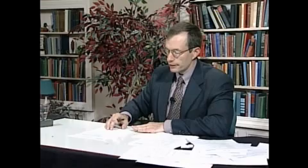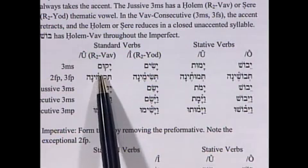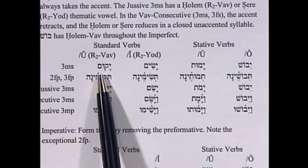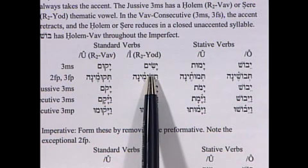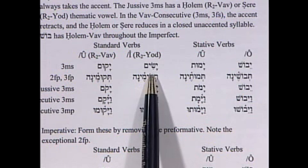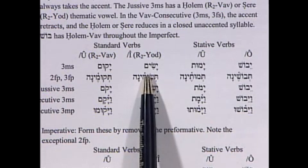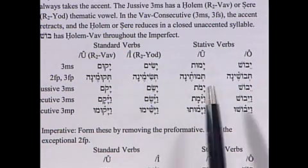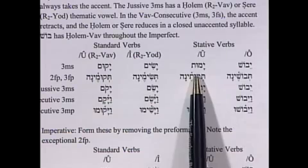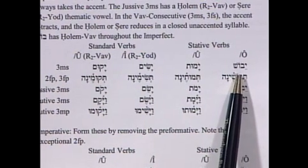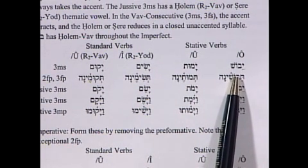For the Qal imperfect: with an original R2 Vav you get shureq, as in ya-qum for the 3MS. With an original R2 Yod, the yod really occurs — instead of ya-sum you get ya-sim with hireq-yod. For the stative verb, it can follow the shureq pattern (ya-mut), or with holem-vav (ye-vosh). The second and third feminine plural forms have a connecting segol-yod, which apparently comes from an R3 Vav-Yod, giving tekumena.